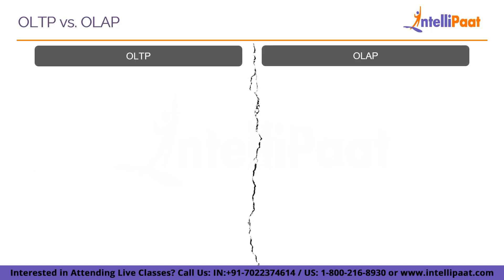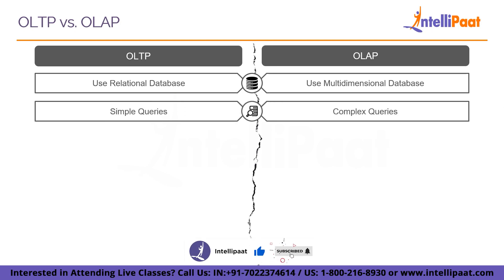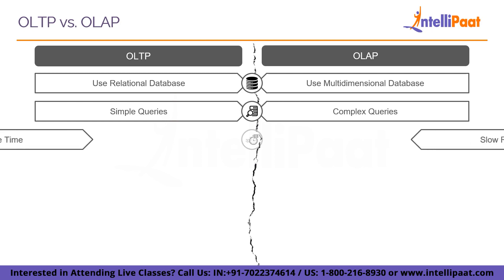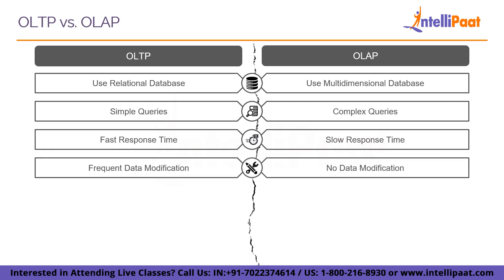There are also significant technological differences between OLTP and OLAP systems. OLTP systems employ a relational database that supports a high number of concurrent users, frequent queries and updates, and very rapid response times. OLAP systems use a multi-dimensional database built from numerous relational databases, allowing for complex searches involving multiple data facts from current and historical data. OLTP queries are often simple and involve only one or a few records, while OLAP queries are sophisticated and involve a huge number of records. Response times for OLTP are lightning quick, while OLAP response times are comparatively much slower. OLTP systems frequently modify data, while OLAP systems never modify data.